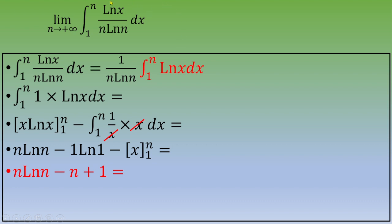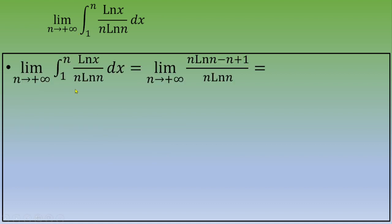Now we compute the limit as n goes to infinity of the original integral. Substituting our result, this becomes the limit as n goes to infinity of (n·ln(n) minus n plus 1) divided by n·ln(n). We split this into three separate fractions.